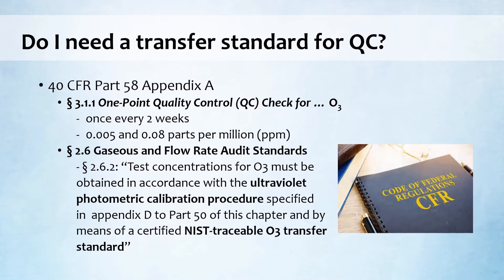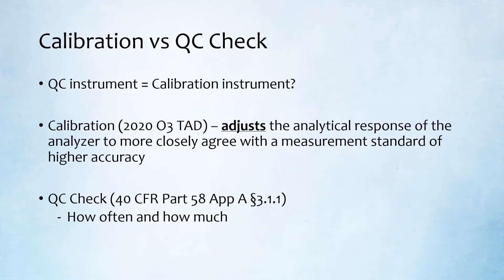In Section 2.6 of the same appendix, the CFR says pretty clearly that for both audits and calibrations, your instrument needs a photometer and needs to be a transfer standard. A lot of confusion results from the use of different terminology across the different guidance documents. The CFR details that equipment used for calibration requires a photometer, but it doesn't explicitly define calibration. And the definition for QC check is even more vague, essentially just going into how often and how much.